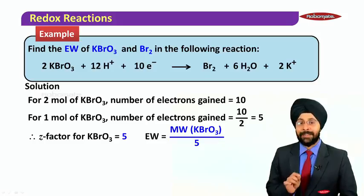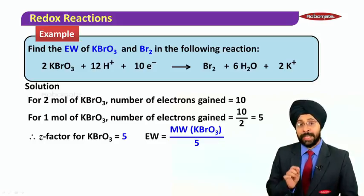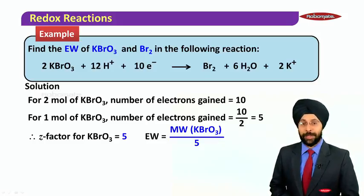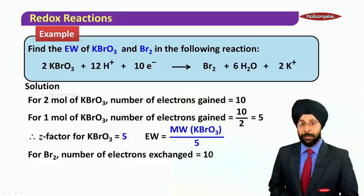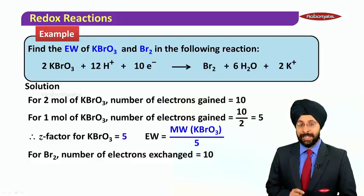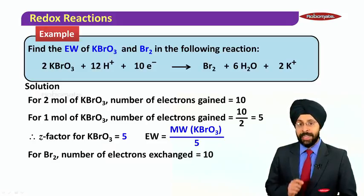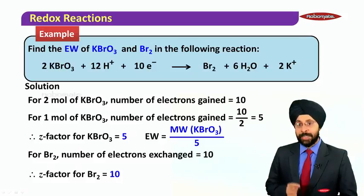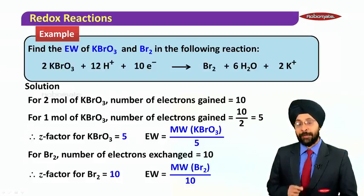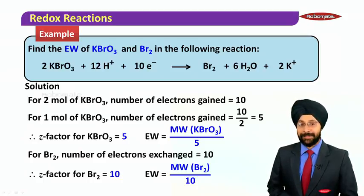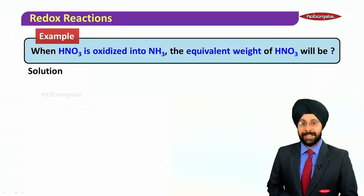I am just symbolically representing, and that is what is important. For Br2, the number of electrons exchanged are 10, and since there is only 1 mole of Br2, the Z-factor of bromine becomes 10. Therefore, equivalent weight equals molecular weight of bromine divided by 10.